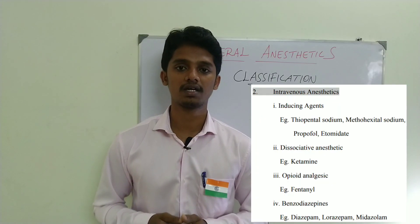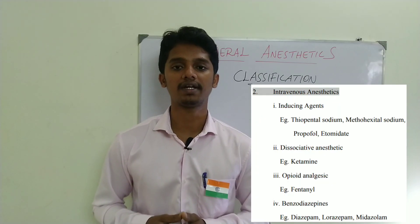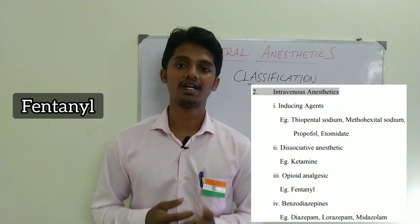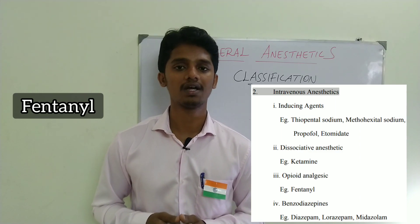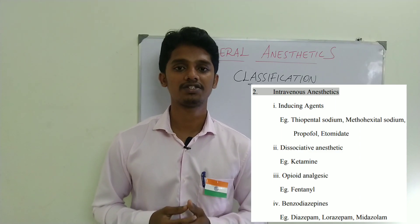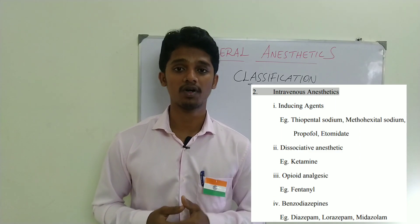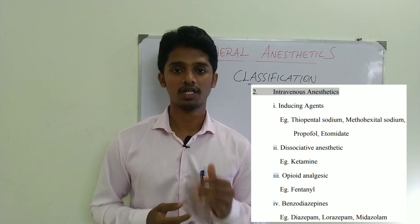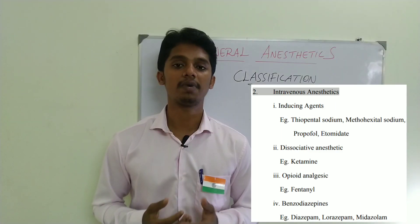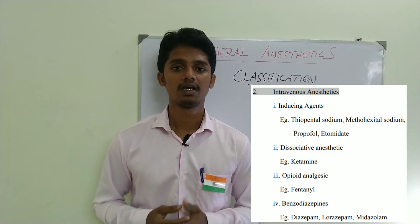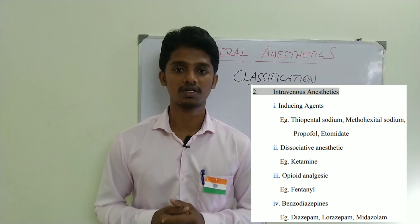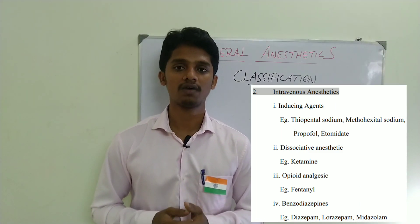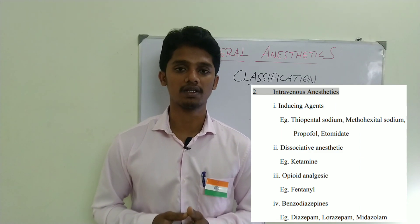Next, opiate analgesics — for example, fentanyl. Fentanyl can be used as an analgesic, and general anesthesia can be produced, but its use is limited. Then there are benzodiazepines, which also have multiple uses, one of which includes producing general anesthesia.